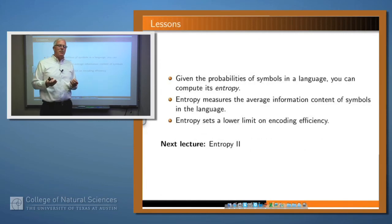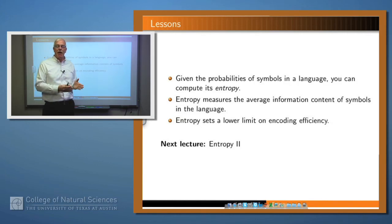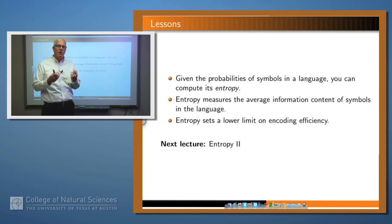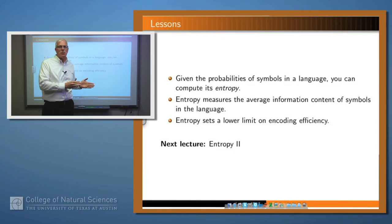So what have we said? Given the probability of symbols in a language, you can compute the entropy. Entropy is a measure of the information content of the language in terms of the average information content of a symbol in the language. Entropy then gives us a lower limit on the encoding efficiency for that language, meaning that if you know the entropy and you have an encoding, you can measure the efficiency of the encoding, and you also can't do any better than an encoding which matches the entropy. Thank you.